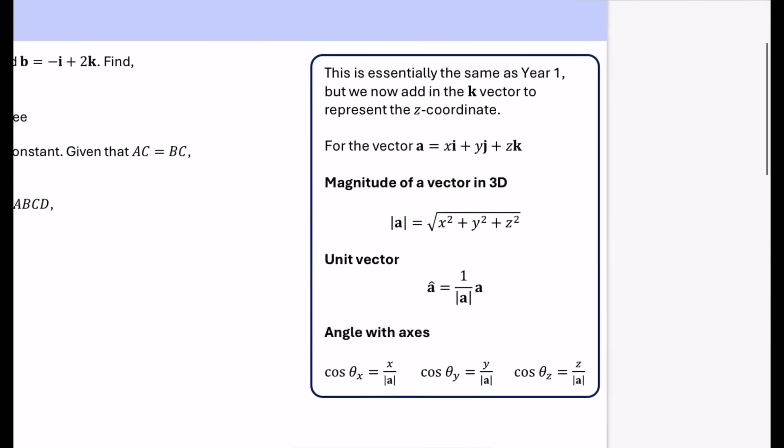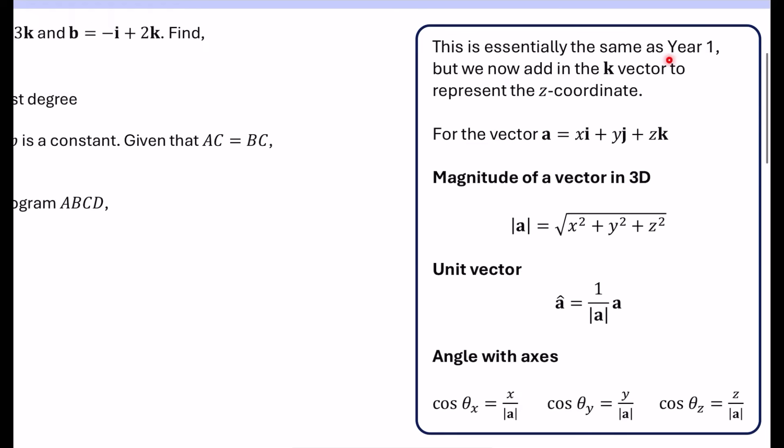It's a pretty straightforward topic because this is essentially the same as the Year 1 kind of skills, except we're now adding in the k vector, which represents the z coordinates. So instead of it normally being like xi plus yj, we're now going to have a vector xi plus yj plus zk. So we've got three dimensional coordinates for this.